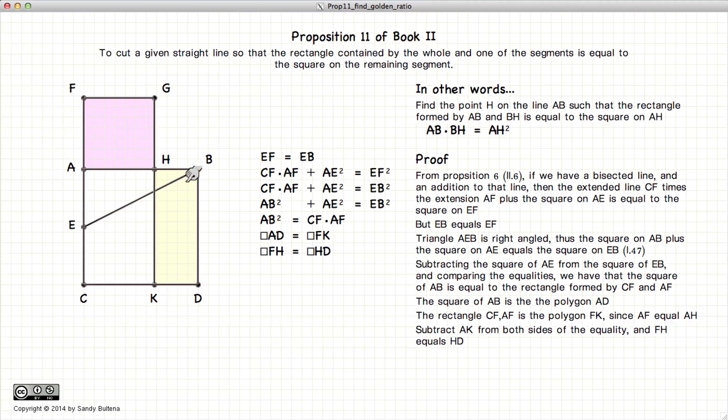HD is equal to HB times BD. But BD is equal to AB because we constructed this as a square. So HD is equal to HB times AB.